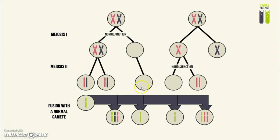and you end up with a gamete that has nothing inside of it. So when fusion with a normal gamete happens, you end up with trisomy in one cell and monosomy in another cell.